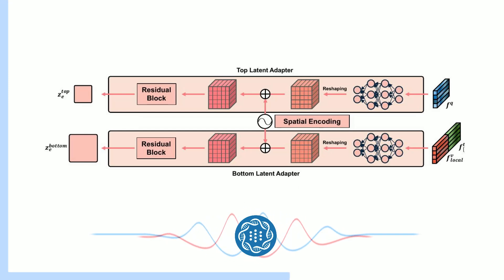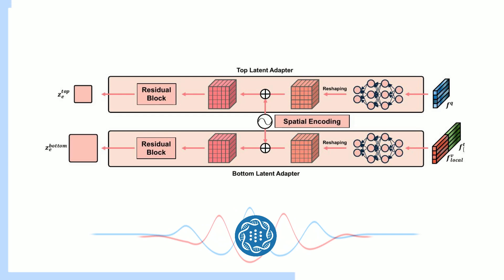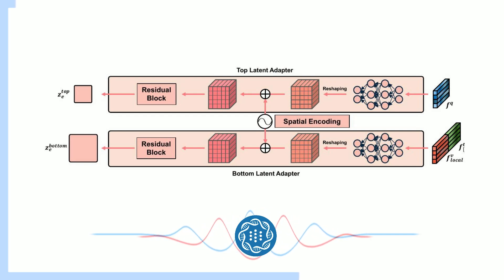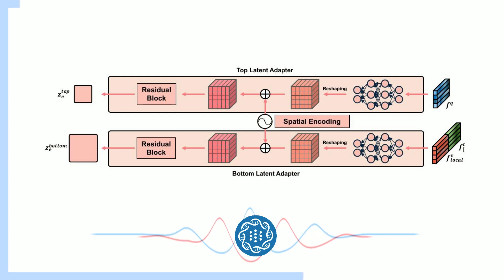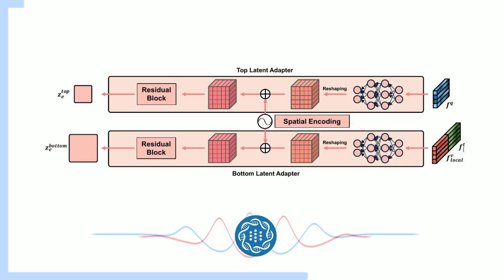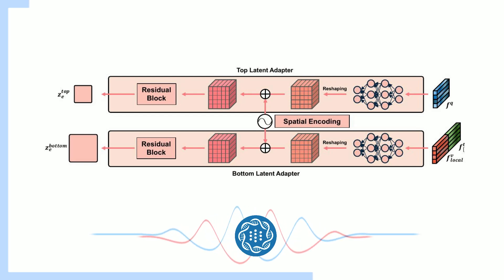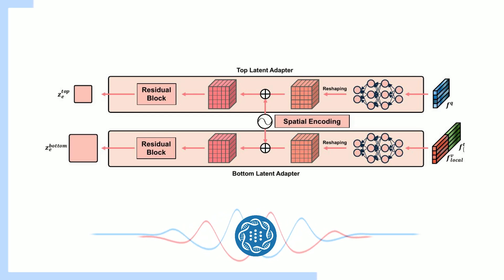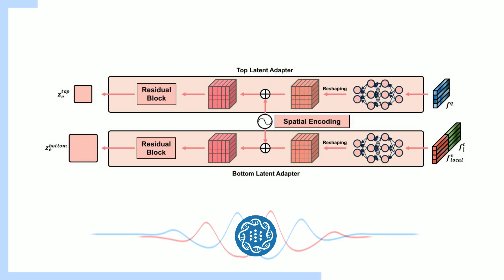They also evaluated it on cross-modal tasks, which involved both images and text. They used the MIMIC-CXR dataset — that massive collection of chest X-rays and reports — to assess how well MedUnifier could match images to reports. And once again it excelled, showing that it truly grasps the connection between the visual and textual information. It's not just understanding images or text in isolation — it's making that crucial connection between the two, which is how radiologists work in the real world.